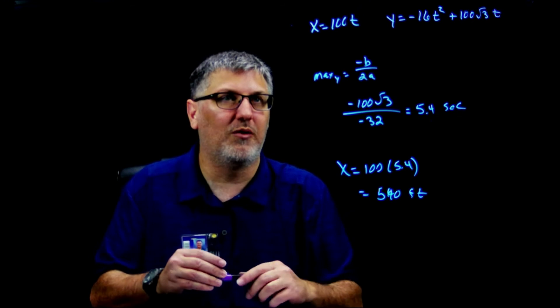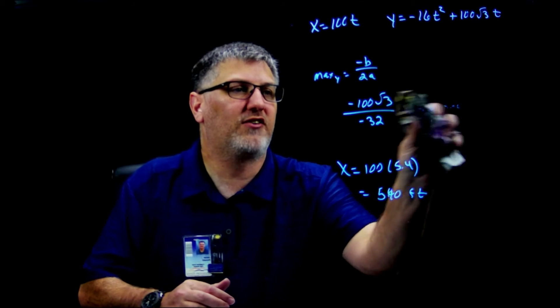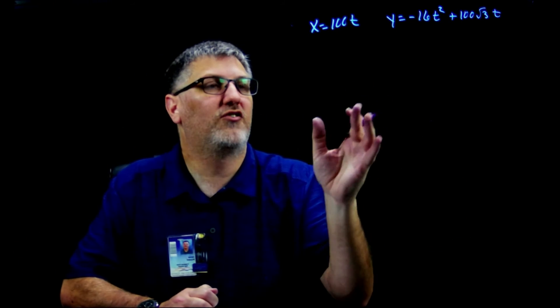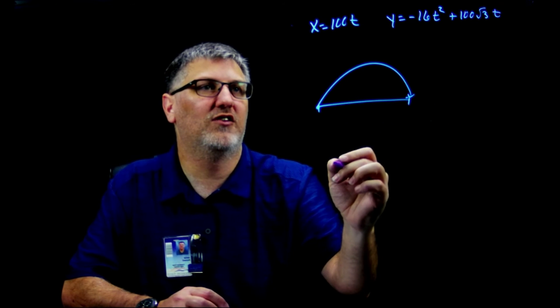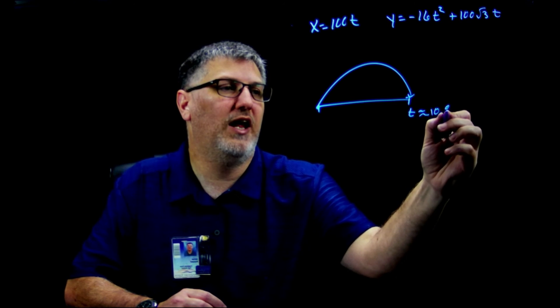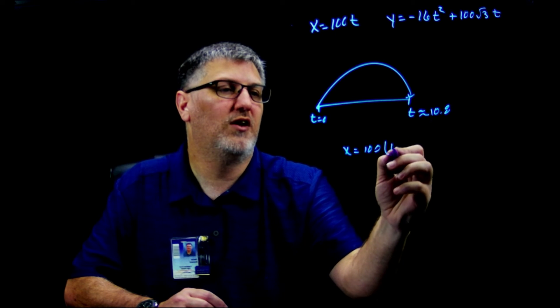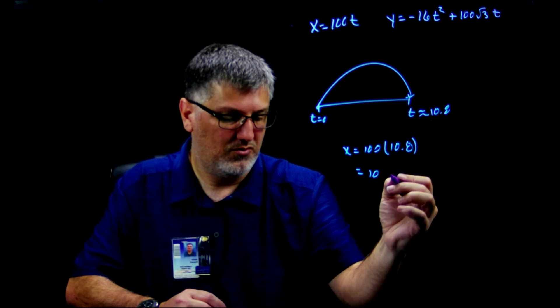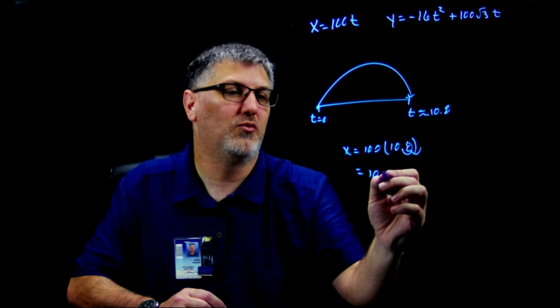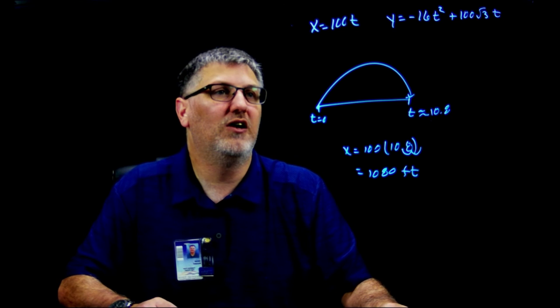Now I want to ask you to determine how far did it actually travel. If I have my projectile here and it's gone this way, I'm asking for this x distance. I already knew that t is approximately 10.8 and this t = 0. If I'm asking for this x distance, my distance x = 100 times 10.8, move my decimal two places, it's going to be 1080 feet. So it has traveled 1080 feet in 10.8 seconds and voila, you're done.